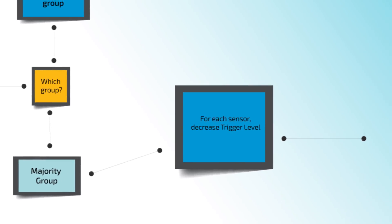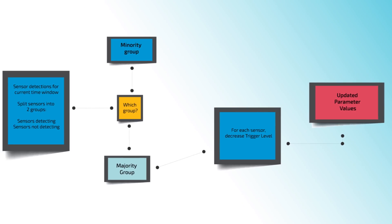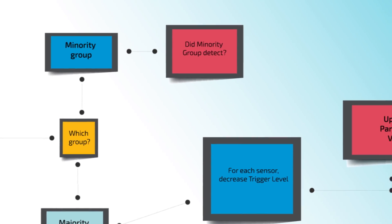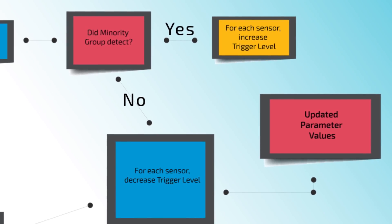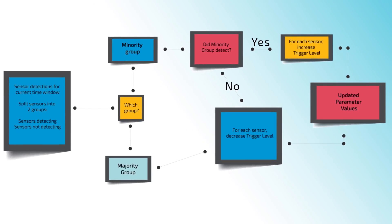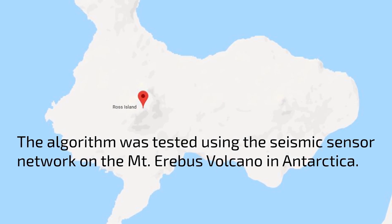At every time step in this process, we lower the trigger level — the particular parameter we're adjusting — for every sensor. And what we want to do is drive the threshold down as low as we can, so we're as sensitive as possible, but we don't want to have any false detection. So we drive it down to just above the noise floor.